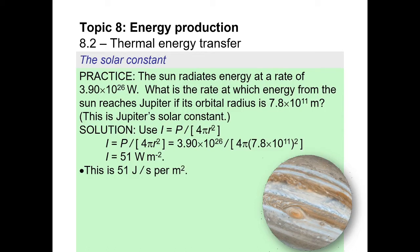Hello and welcome to Lesson 8.2, Thermal Energy Transfer Video 2 of 3. On your screens now is the slide we left off with last time, where we determined the solar constant for Jupiter. We found that it was 51 joules per second — that much energy is coming every second to every square meter of Jupiter's surface — whereas for the Earth it was almost 1400, so a huge difference.